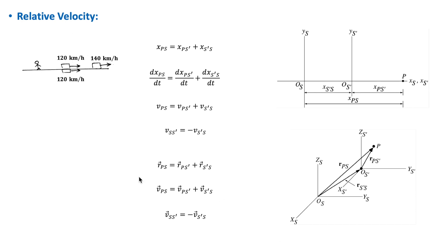Now suppose a third car is moving ahead of the two at a speed of 140 km/h relative to the stationary observer on earth. The speed of this third car relative to an observer in either of the two cars is 20 km/h, because 140 minus 120 equals 20. This example shows how displacement and velocities may have different values when measured relative to different observers.